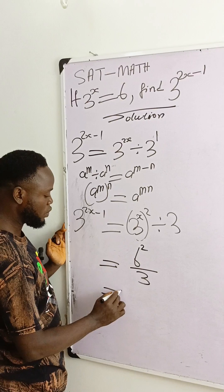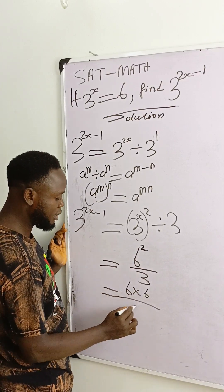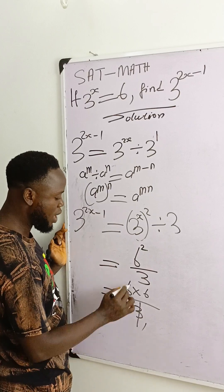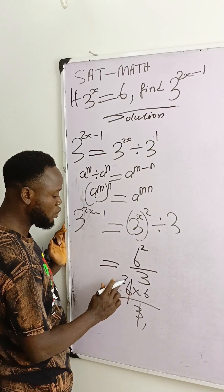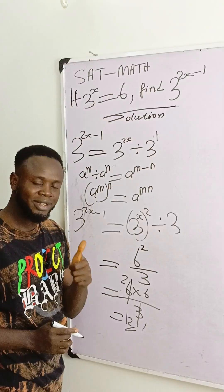Then this equals 6 exponent 2, which is 6 times 6, over 3. This is 36 divided by 3, which equals 12. So 12 is the answer to this question. Thank you.